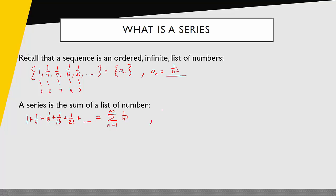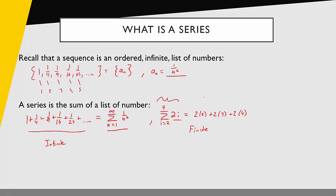To reinforce what sigma notation is doing, let me generate another series: the sum from i equals 2 to 4 of 2i. Writing this in expanded form, I evaluate the argument at i equals 2, i equals 3, i equals 4, giving me 2 times 2 plus 2 times 3 plus 2 times 4. So I have two important characteristics: the second series is a finite series with only three terms, while the first was an infinite series with infinitely many terms. I also have two ways to represent series: sigma notation and expanded form.